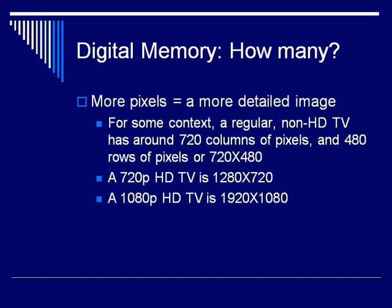How many pixels do we need to have in memory? The more pixels we have, the more detail an image will have, and the more spatial contrast we can have. For some context, a regular non-HD TV has around 720 columns of pixels and around 480 rows of pixels — so a regular TV is 720 by 480. A 720p HD TV is 1280 pixels by 720 rows. A 1080p TV is 1920 columns of pixels and 1080 rows of pixels. The more detail you have, the more pixels you have, and vice versa.